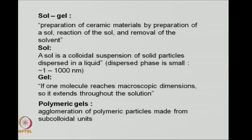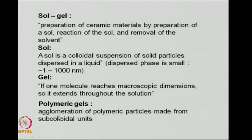In a typical sol-gel process we prepare a sol, then react the sol to get the gel, and finally remove the solvent. In a sol you have a colloidal suspension of solid particles where the dispersed solid phase has particles of the order of 1 to 1000 nanometers. When the sol reacts and forms an interconnected network structure we get the gel, which reaches macroscopic dimensions and extends throughout the solution. You can get polymeric gels by the agglomeration of polymeric particles made from sub-colloidal units.